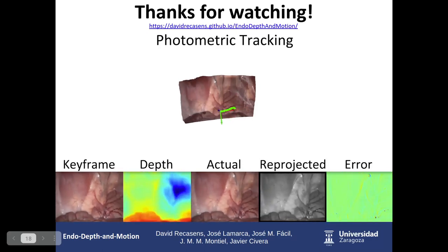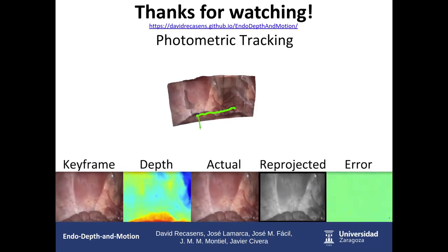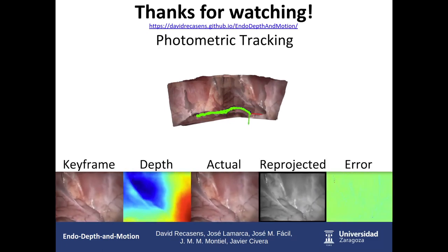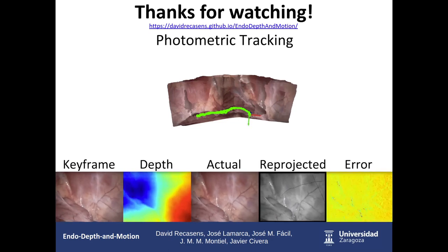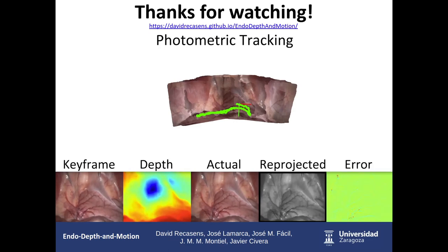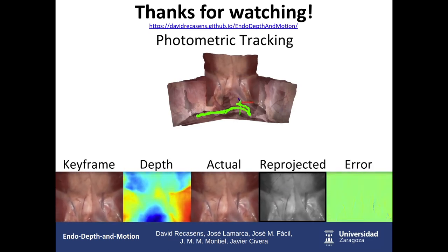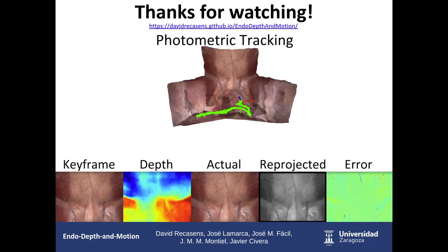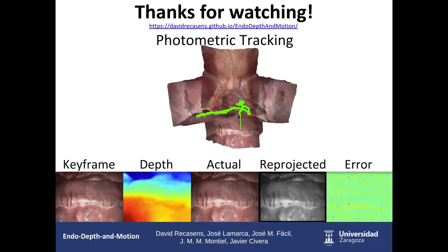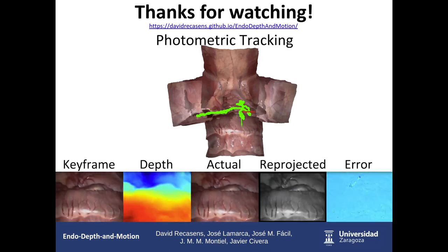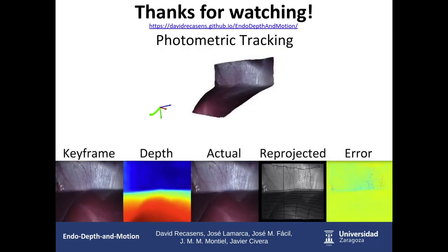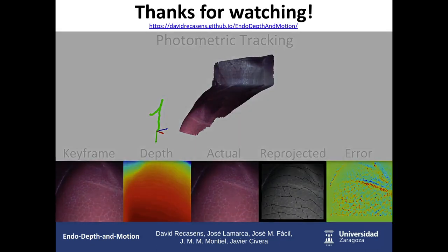Here you can see EndoDepth and Motion working: specifically the photometric tracking part. In the bottom left you can find the keyframe, its depth estimated by the network, the current frame reprojected using the depth to the keyframe image plane to generate the reprojected image, and the photometric error between the keyframe and the reprojected color image. Also shown is the volumetric fusion using the truncated signed distance function to produce the smooth final 3D reconstruction.